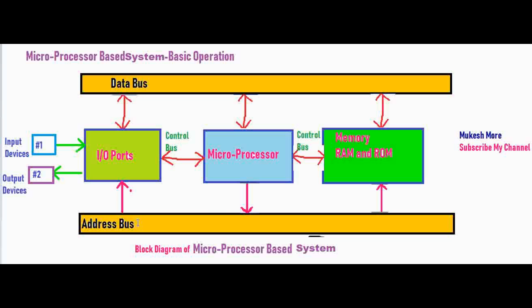We also have a control bus. The control bus is a set of lines which is used for controlling the different operations of the microprocessor. The control bus appears between the input-output port and the microprocessor, and between the microprocessor and the memory.